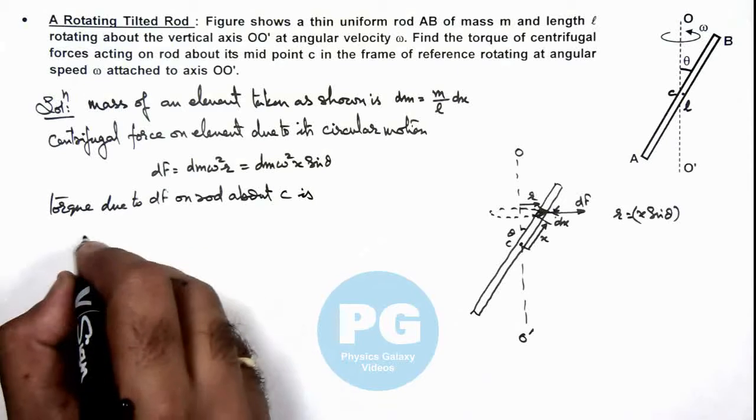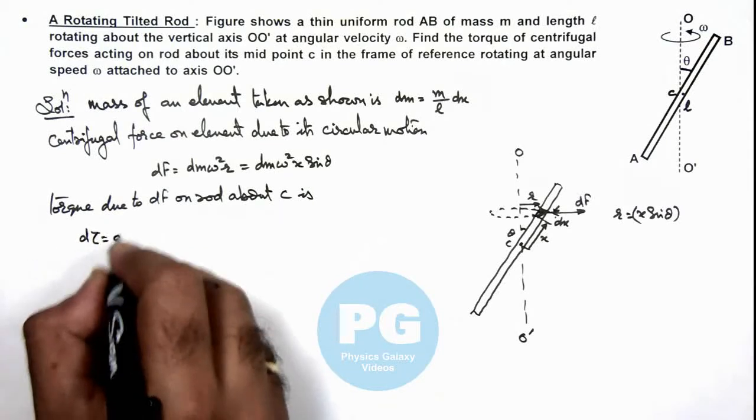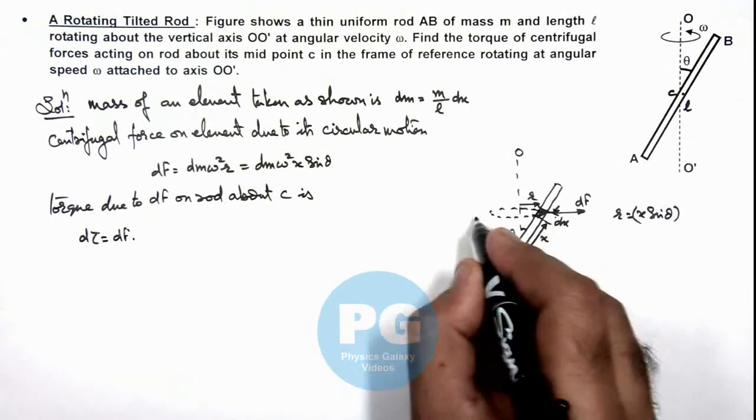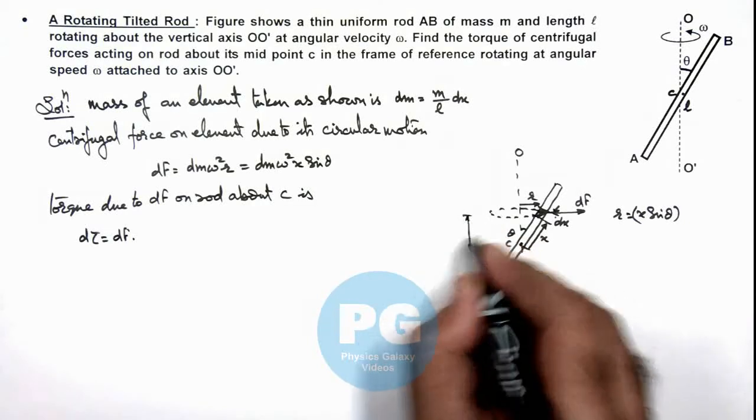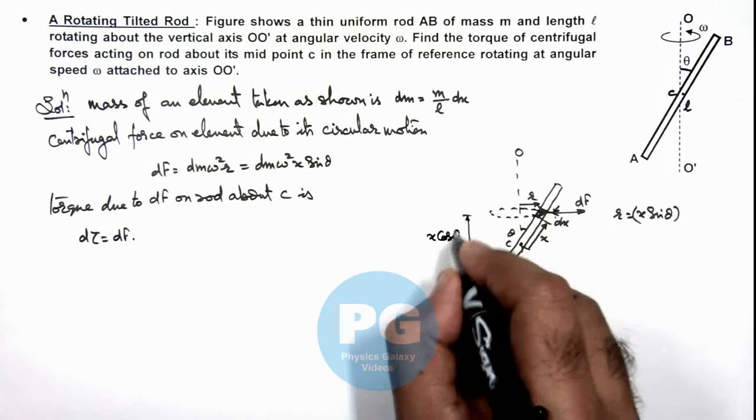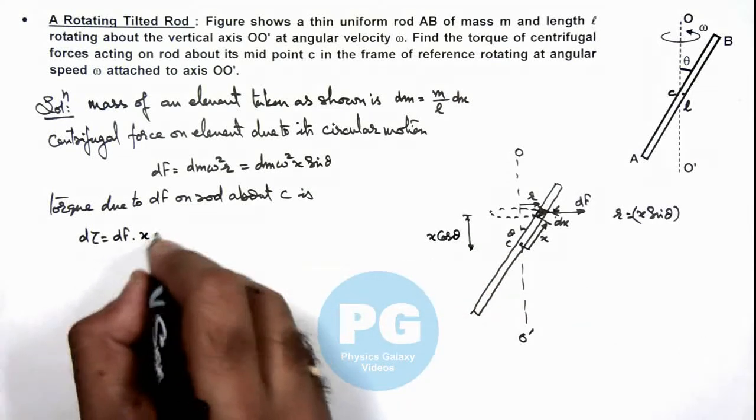Multiplied by this distance. Here we can see from point C the line of action of df is x cos theta, so this can be written as df x cos theta.